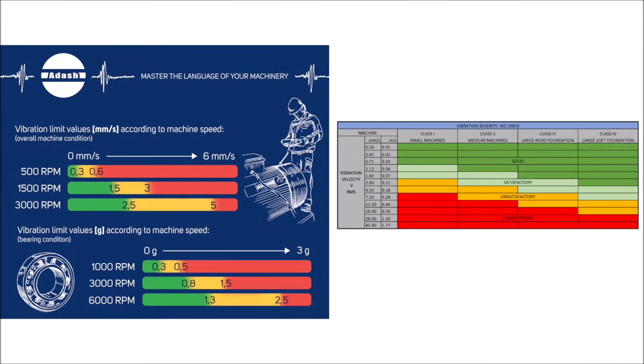Whether we use ISO or ADASH vibration limit values, they are just informational. You should always try to find out what the vibration limit values for your particular machine are. In other words, to find out what the optimal operational condition of your machine is. You can do that by measuring and comparing more machines of the same type, running at the same speed and under the same load. Or, you can ask a vibration diagnostician, who should be able to make a deeper analysis of the machine, and tell you if the machine is running under its optimal condition.